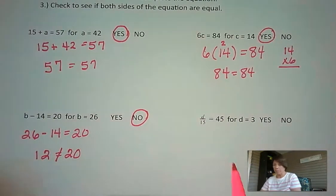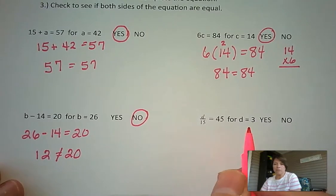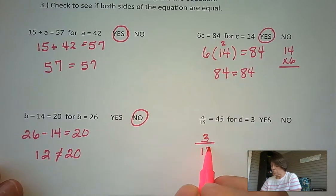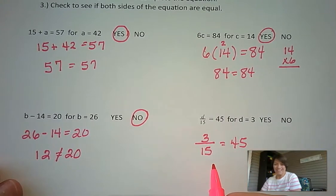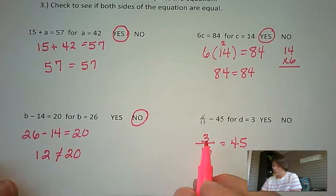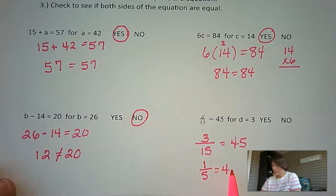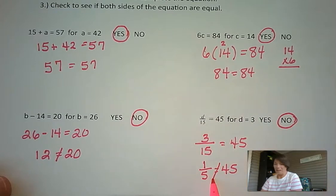And for our last one, d divided by 15 equals 45 if d is 3. So we're going to substitute 3 in for our d over 15 equals 45. Now this means 3 divided by 15. Now 3 divided by 15 is never going to be 45. We could do 3 times 15, so be careful here, would be 45. I could reduce this, this is like a fraction, and this would become 1 fifth. And I know that if I took 1 and divided it by 5, it would be worth 0.2. So 0.2 is not going to be equal to 45. 1 fifth is not equal to 45. So this is a definite no on this one.